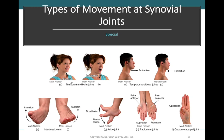Elevation is when we move a part of our body superiorly; depression is the exact opposite, moving something inferiorly. Protraction is moving something anteriorly, and retraction is moving something posteriorly. In the anatomical position, palms facing anteriorly is supination; turning our arms over so the palms face toward the back of the body is pronation. Plantarflexion decreases the angle between the plantar region and the leg bones, while dorsiflexion moves the foot toward the dorsal — top — side.